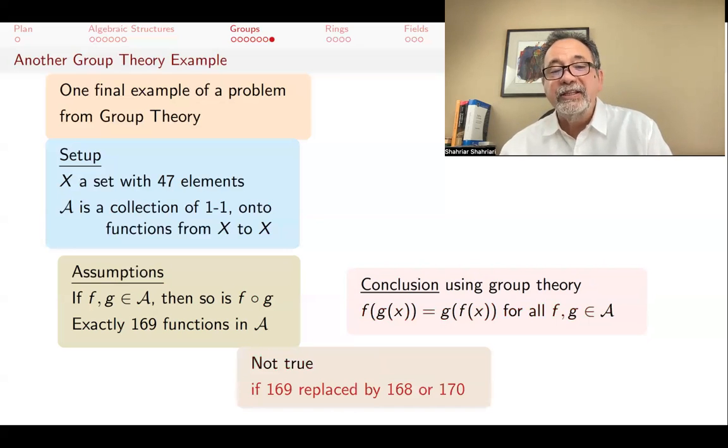And it's not at all obvious because this is not true if instead of 169, if you have 168 or 170 bijections, then it would just not be true. It would be very possible to come up with an example where that's not the case.